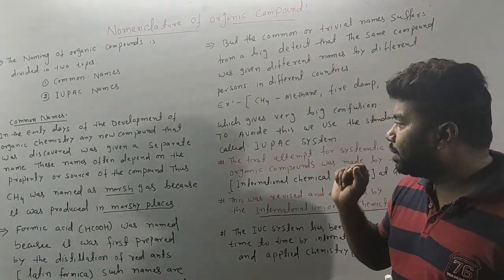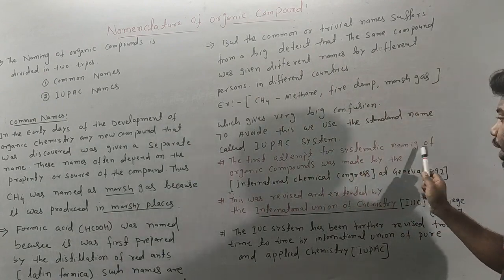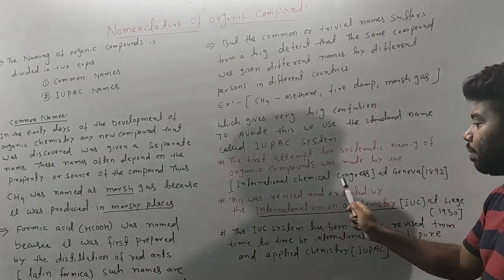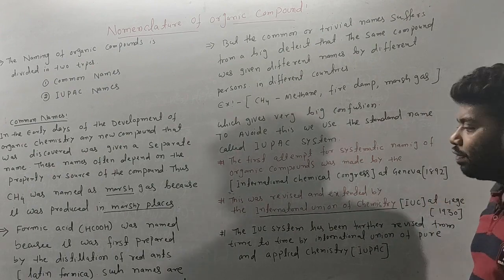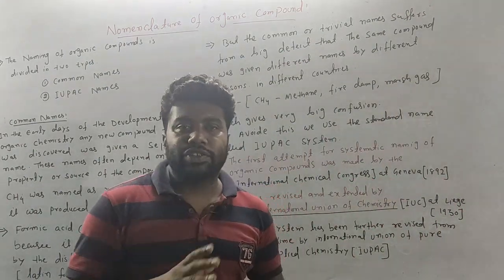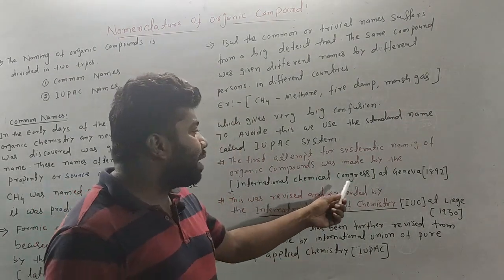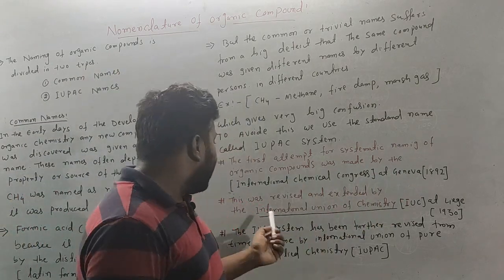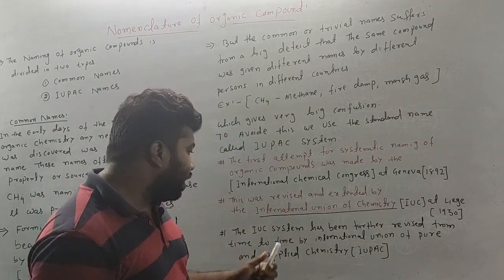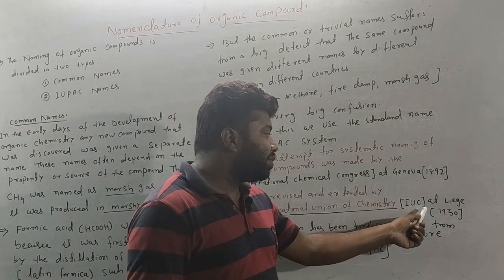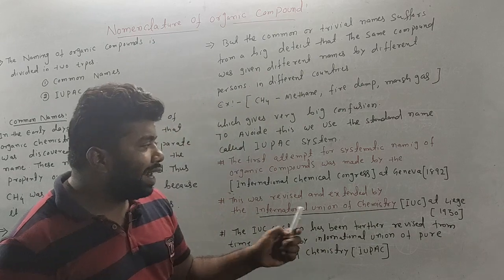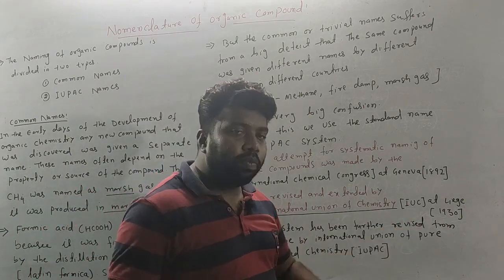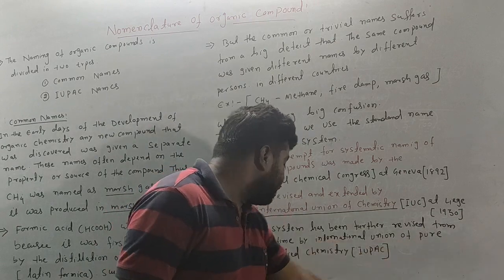The systematic naming of organic compounds was first established by the International Chemical Congress (ICC) at Geneva in 1892. This system was later revised and extended by the International Union of Chemistry (IUC) in 1893.